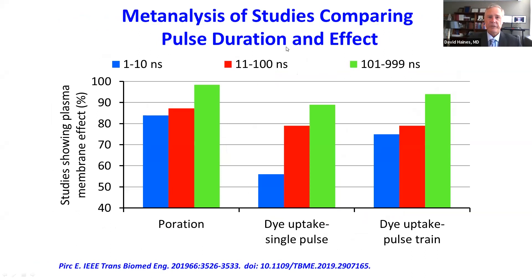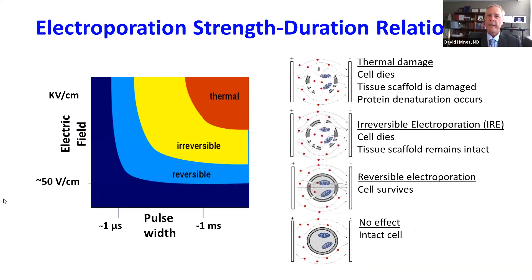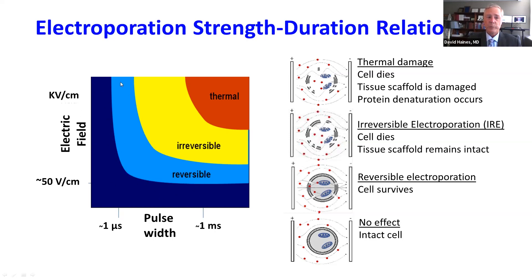A meta-analysis looking at studies with different pulse durations shows that as you increase pulse duration, the membrane effect increases — something many studies have shown across many tissues. This produces a familiar strength-duration curve: higher amplitude with shorter duration, or lower amplitude with longer duration, can achieve the same threshold effect, but asymptotic and chronaxie values exist. There is a range with no effect, a range with a reversible effect, and then a range of irreversible effect.